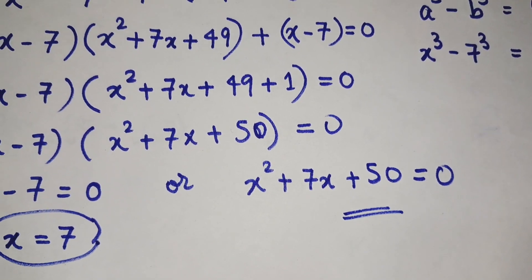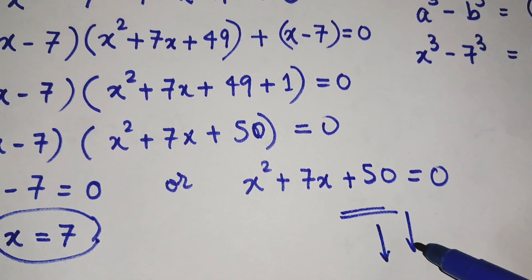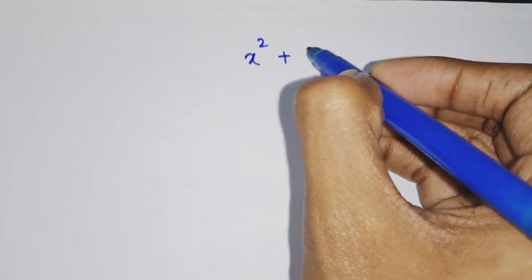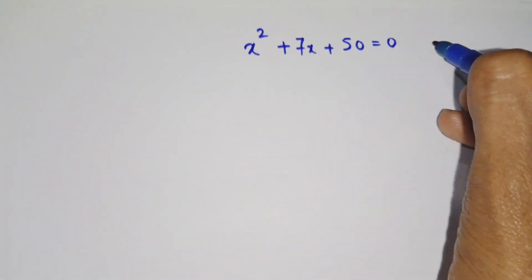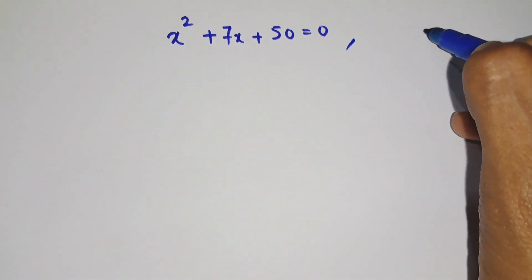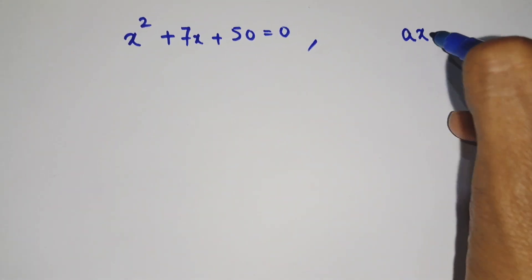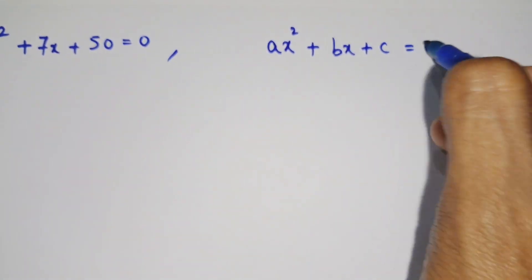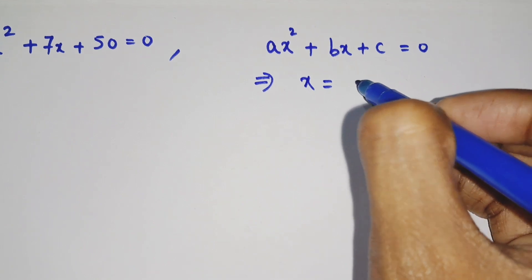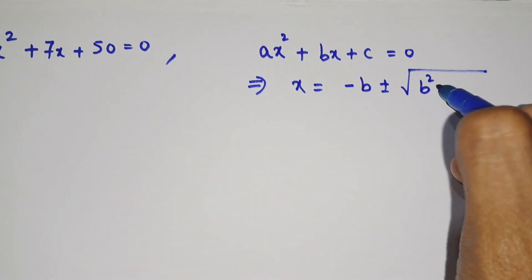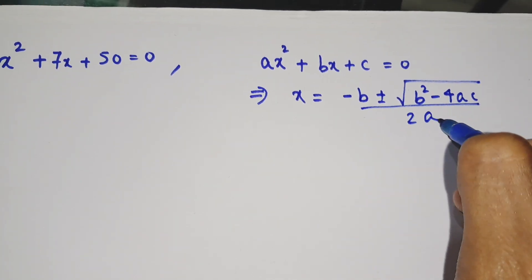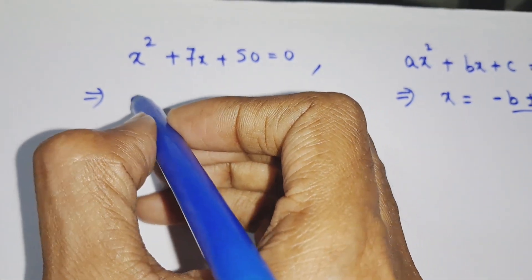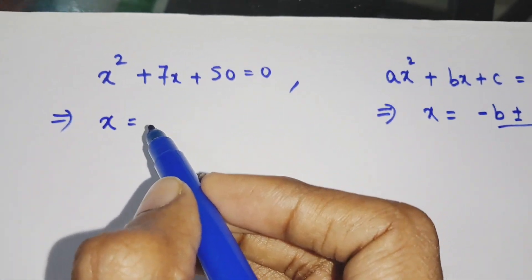The remaining two solutions we will find from x squared plus 7x plus 50 equals to 0. This is a quadratic equation, so we will use the quadratic formula: x equals minus b plus or minus square root of b squared minus 4ac, whole divided by 2a. From this equation, small a equals 1, small b equals 7, and small c equals 50.